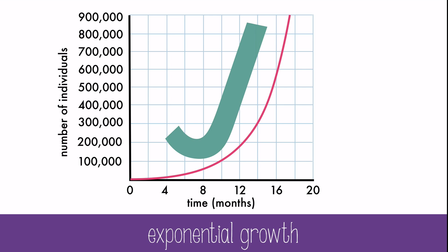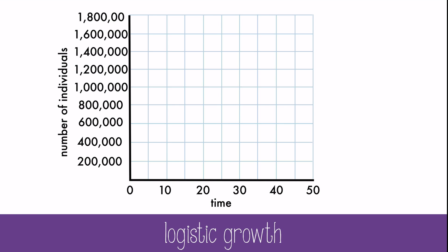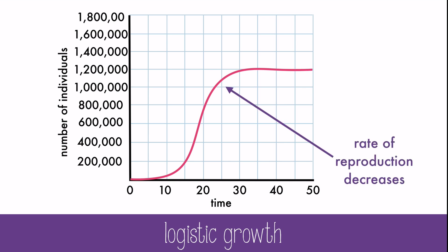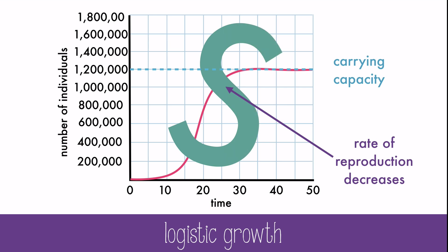At this point, there are unlimited resources and unlimited space. But the reality is that at some point, space and resources will run out. As the size of a population increases, the rate of reproduction will actually decrease. When the population reaches carrying capacity, population growth ceases and you see a flattened line. Carrying capacity is determined by limiting factors like space, food availability, and predators. This logistic growth curve looks like a stretched-out S, so it's sometimes called an S-curve.